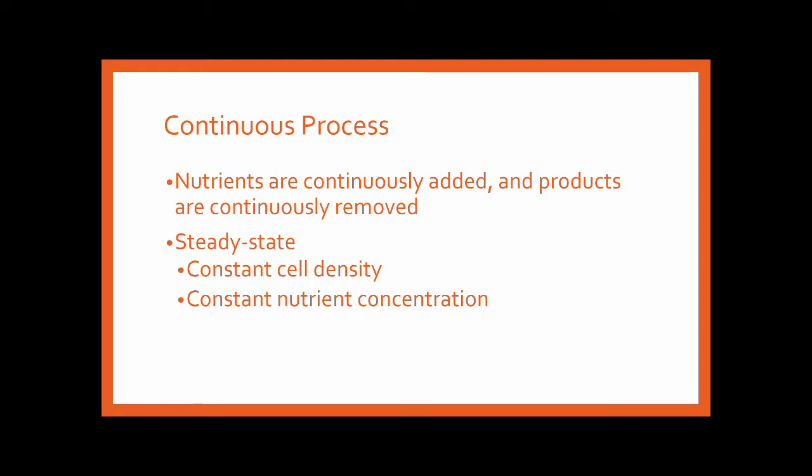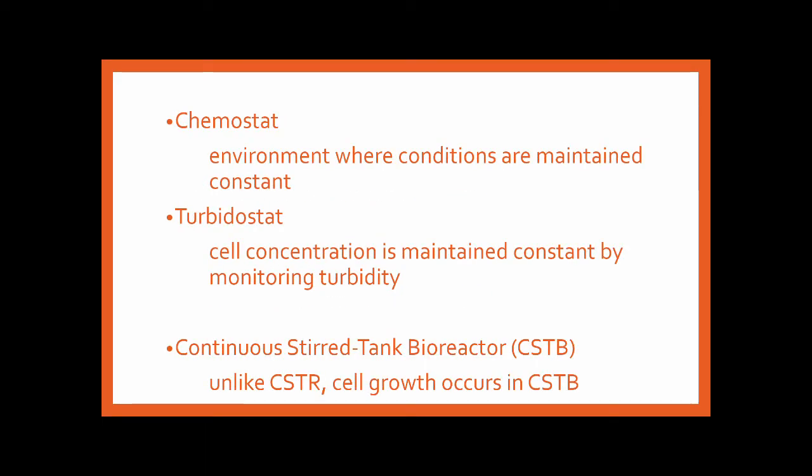For the continuous process, nutrients are continuously added and products are continuously removed — it is similar to a conveyor belt system. The reaction is assumed to be in a steady state condition, meaning constant cell density and constant nutrient concentration. Key to continuous process is the chemostat, where environmental conditions are maintained constant, and the turbidostat, where cell concentration is maintained constant by turbidity measurement.